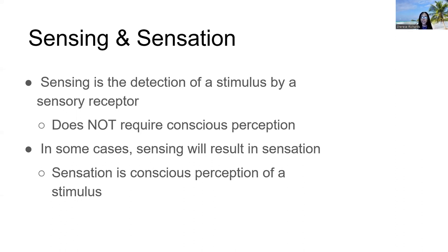Sensation is the conscious perception of detecting sensory stimuli. In some cases, we can sense things which will automatically result in sensation. In other cases, we can have sensory perceptions that are not going to the brain and we're not necessarily having a conscious appreciation of that.